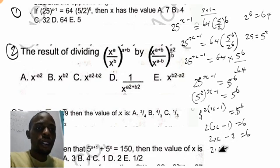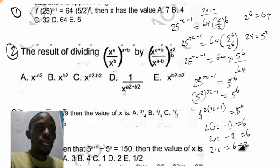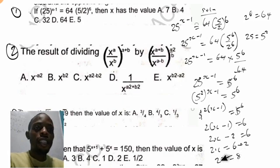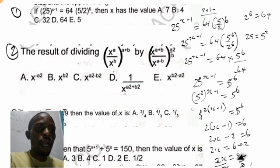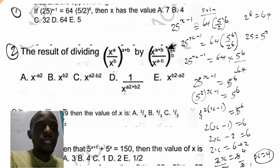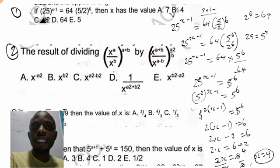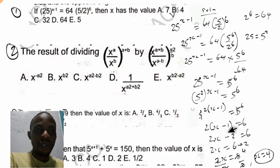Collecting like terms, we take the minus 2 to the other side, giving 2s equals 6 plus 2, which equals 8. To get the value of s, divide both sides by 2: 2 divided by 2 cancels, and 8 divided by 2 gives 4. So s equals 4. The answer to this question is 4, which corresponds to option B.